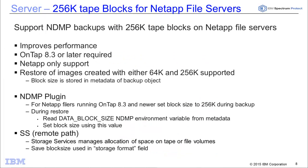Another new enhancement for NetApp filers is 256K tape blocks, which helps to improve performance. ONTAP 8.3 or later is required, and this is only for NetApp devices. When doing backups and restores, we can support either 64K or 256K, and the block size is stored in the metadata so we know how the data was written. When utilizing the NDMP plugin, we set the newer block size to 256K during the backup, and during the restore we read the data block size NDMP environmental variable from the metadata. If you're using SS, the remote path, the save block size is set in our storage format field.